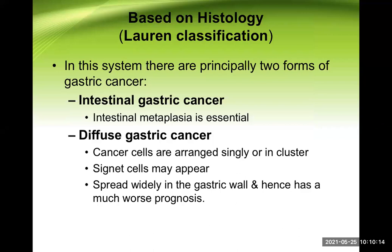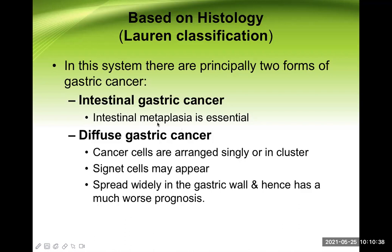Another type of classification is based on histology, also known as Lauren classification. There are principally two forms of gastric cancer. One is intestinal gastric cancer, where intestinal metaplasia is essential — meaning the gastric epithelium is changing into intestinal type of epithelium. Another is diffuse gastric cancer, where cancer cells are arranged singly or in clusters.